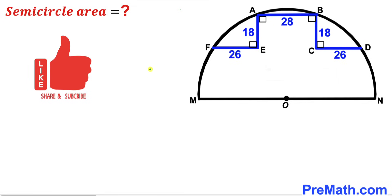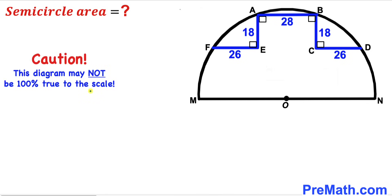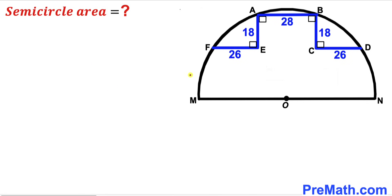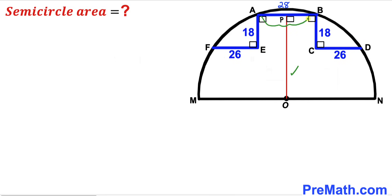Please don't forget to give a thumbs up and subscribe, and please keep in mind that this figure may not be 100% true to scale. Since we are interested in calculating the area of this semicircle, we must calculate the radius r first. In the next step, I have dropped this perpendicular OP on chord AB.